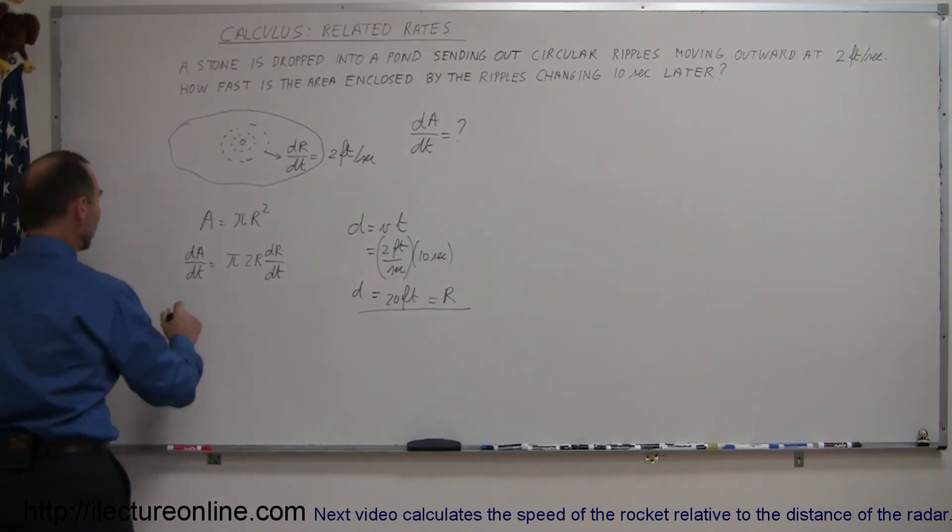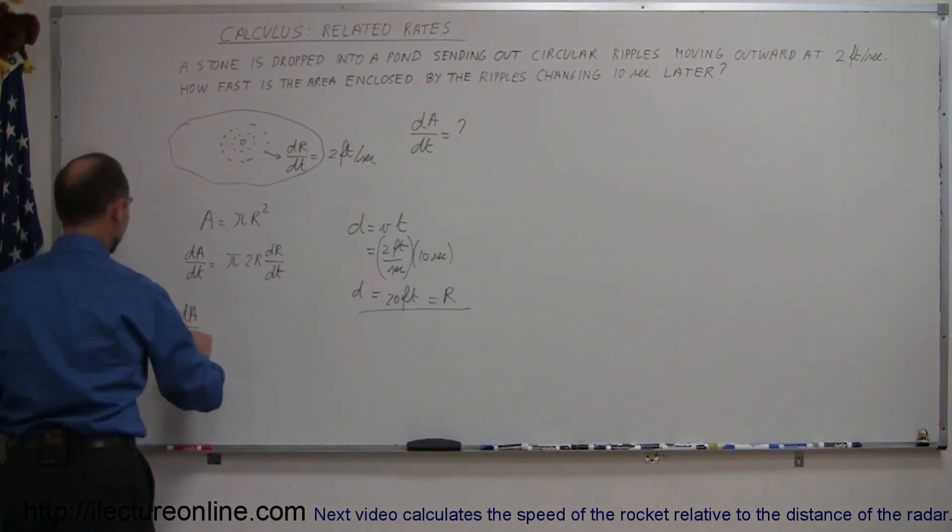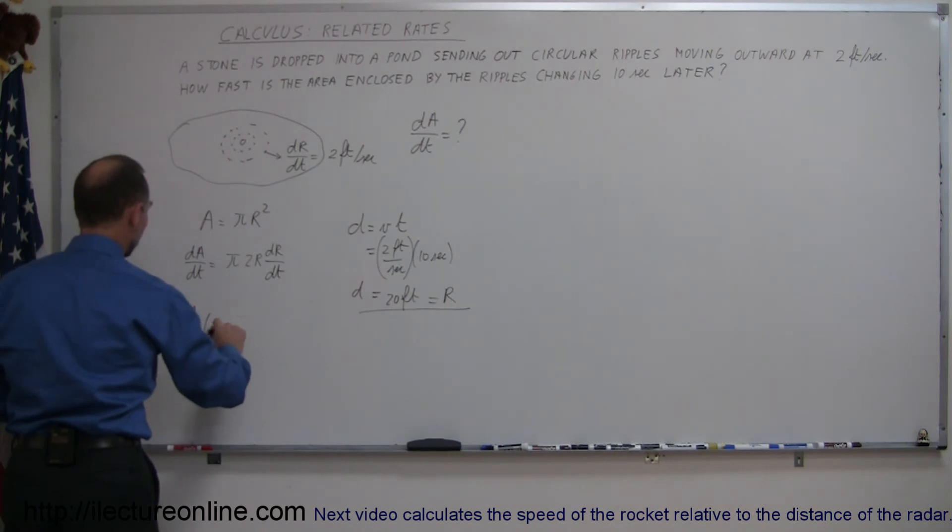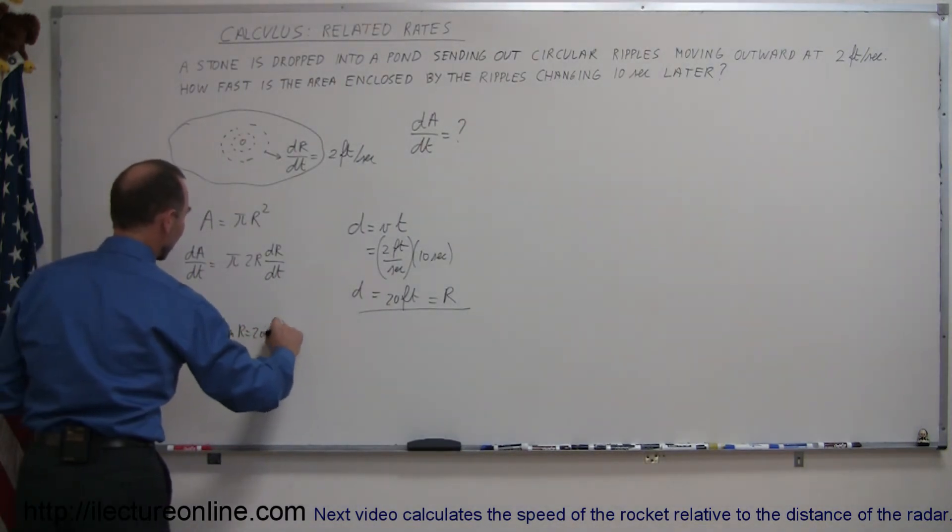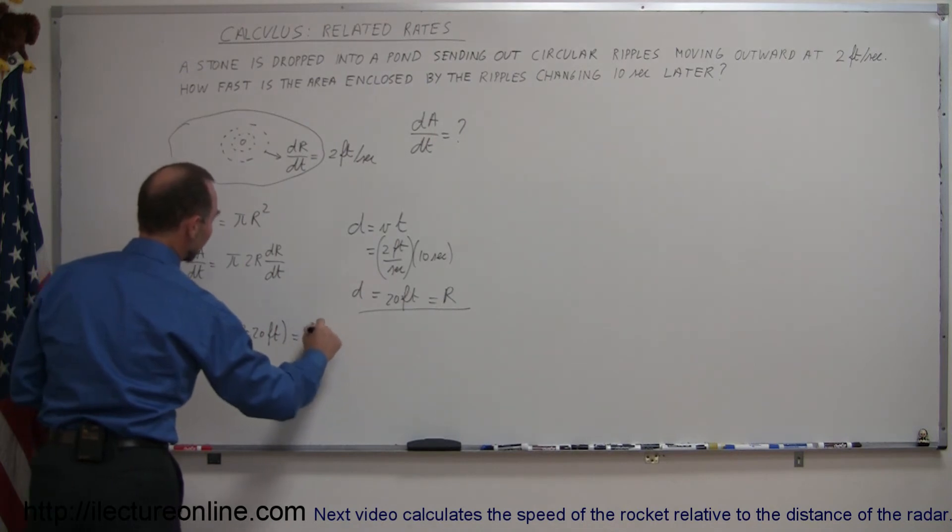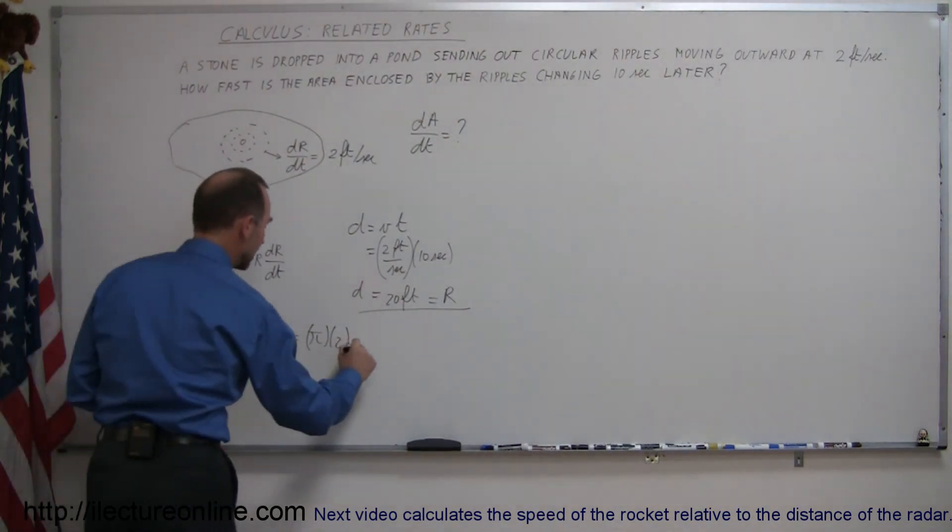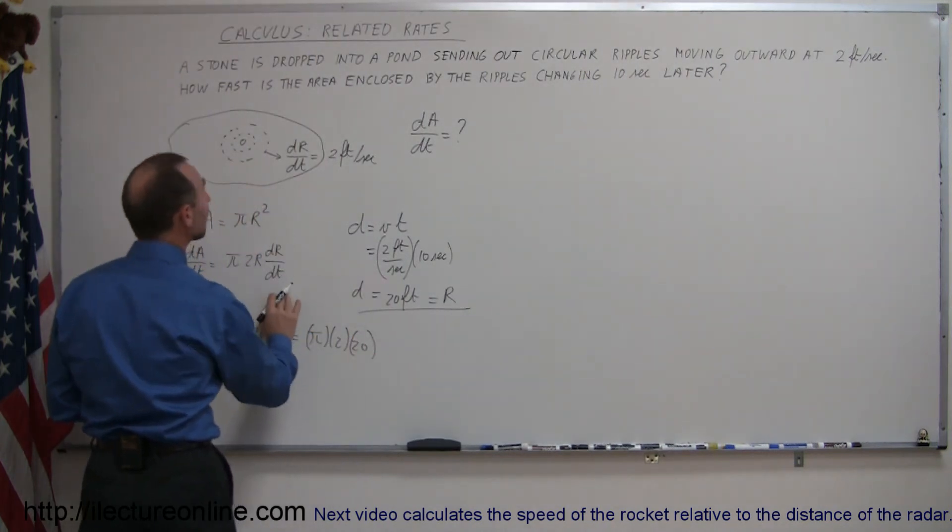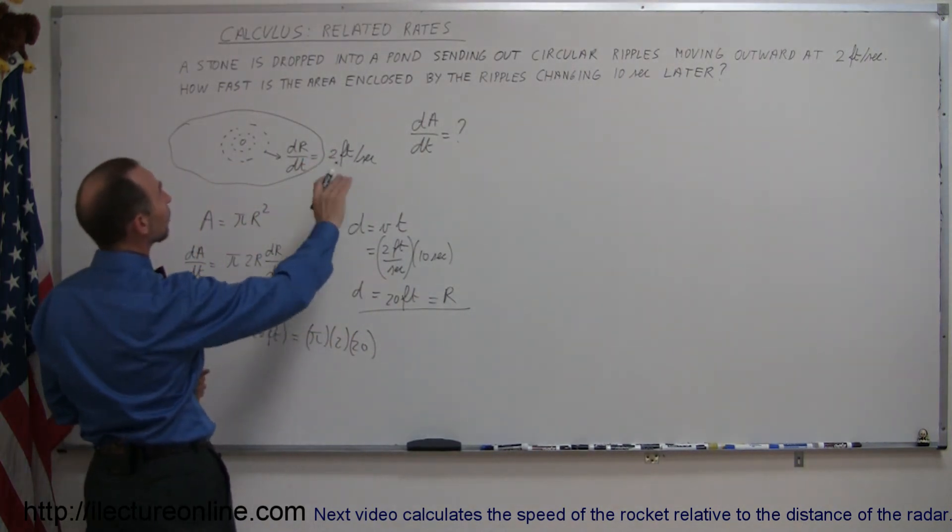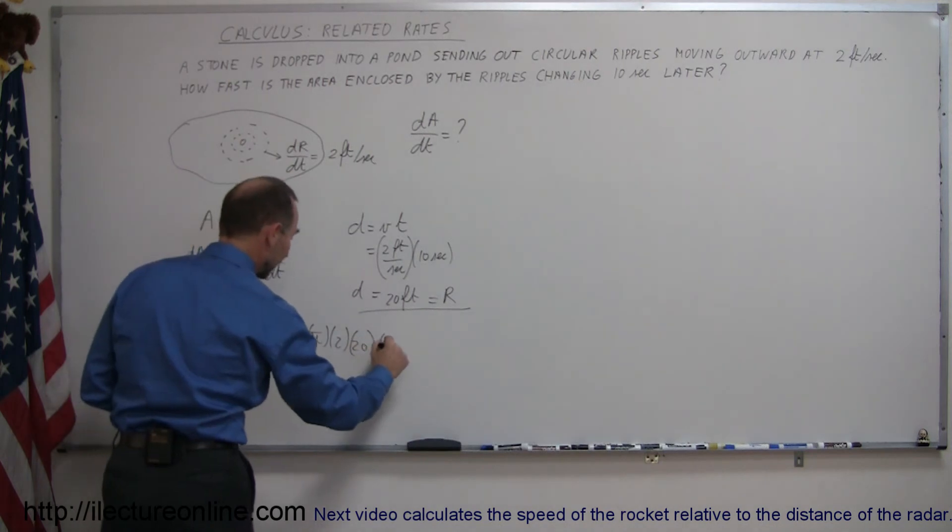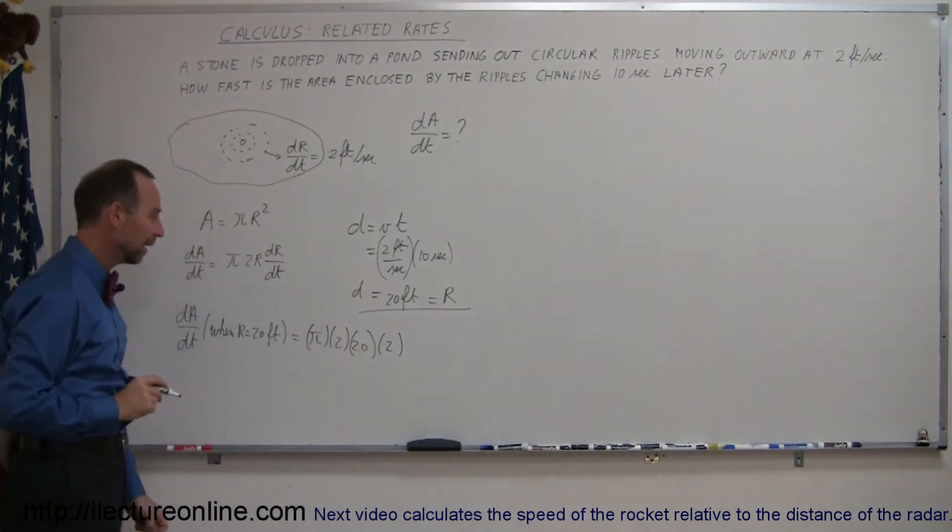We have everything we need to know now. The dA/dt when r equals 20 feet is equal to π times 2 times the radius r, which is 20, times dr/dt, which is 2 feet per second.